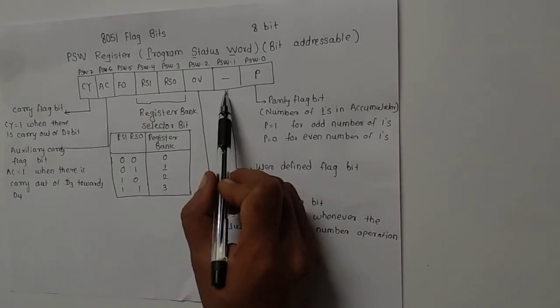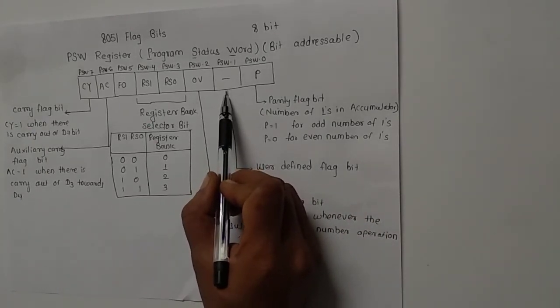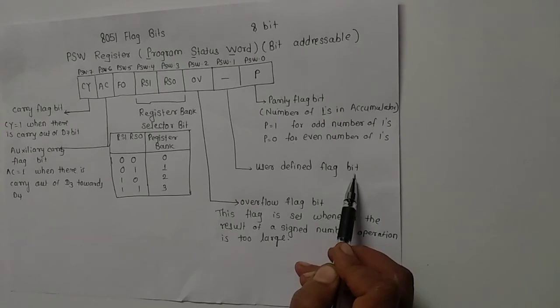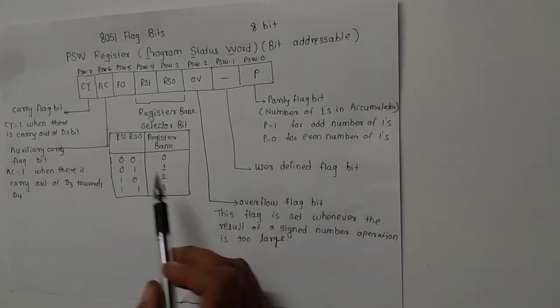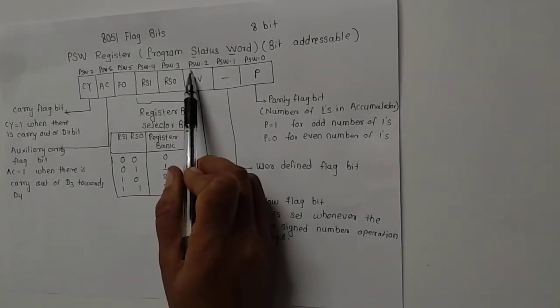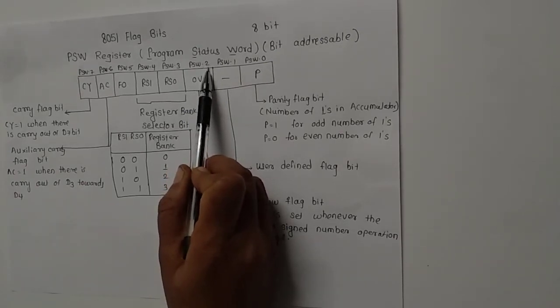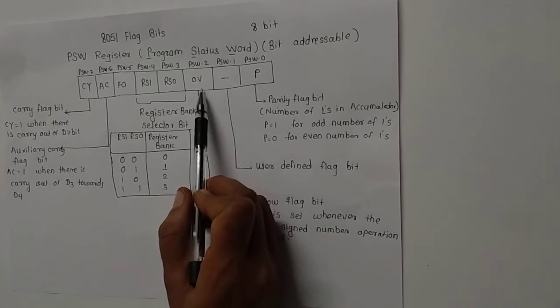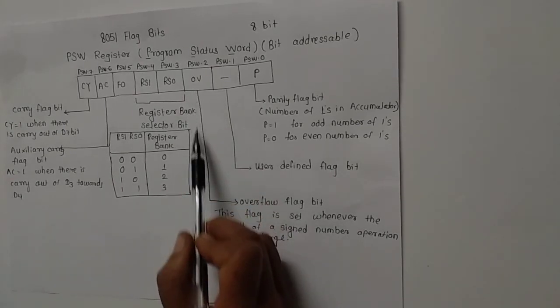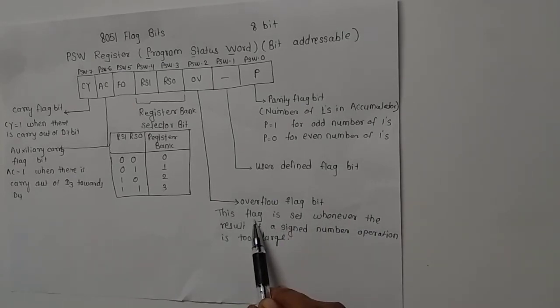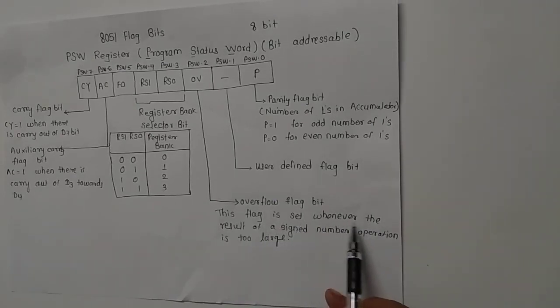The second bit of the PSW register is a user-defined flag bit. The next bit, that is PSW.2, which is the third bit of the PSW register, is the overflow flag bit.